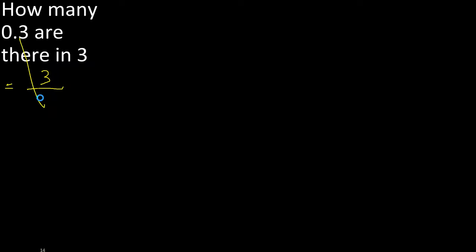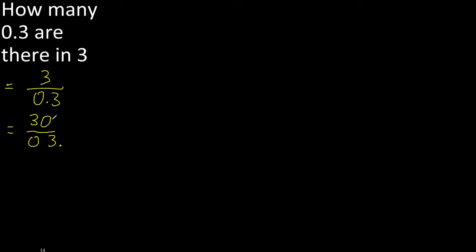3 divided by — how many here, after the point: 1 digit, therefore here 1 0. Here 1 digit, point 1 — 1 digit. Here 1 digit 1 0 — eliminate the point because there is no number. Here, eliminate 0 because there is no point.